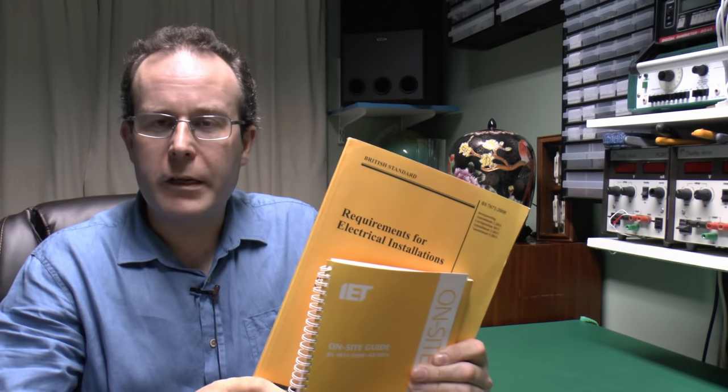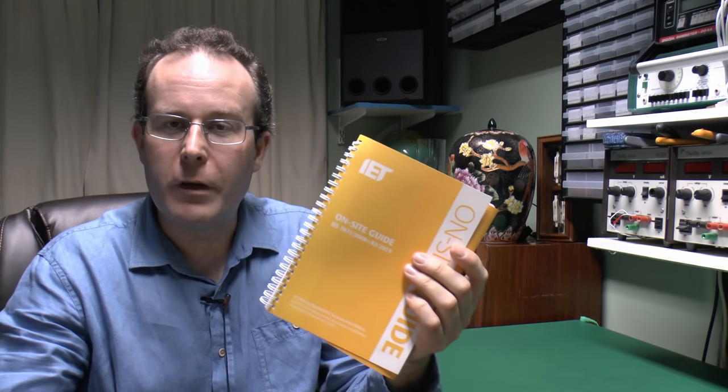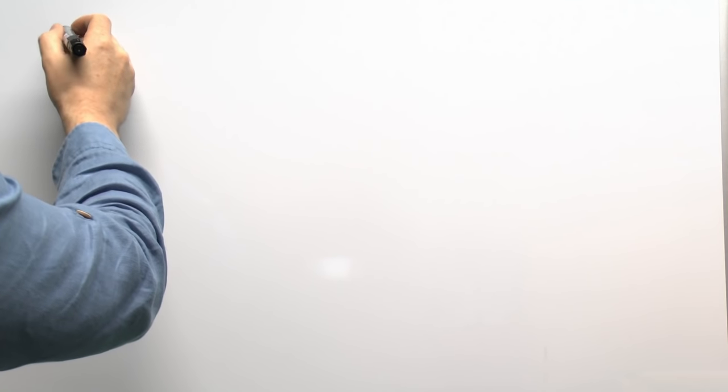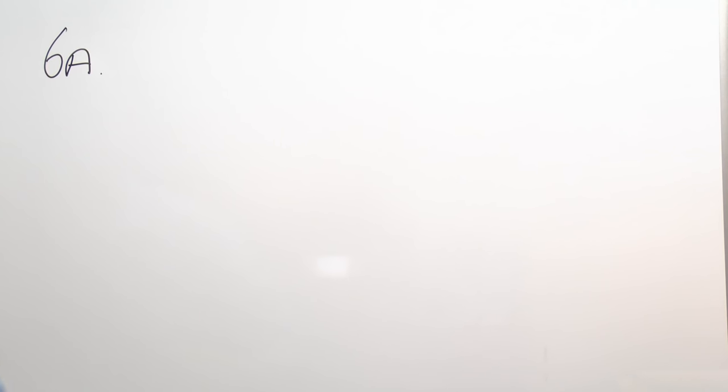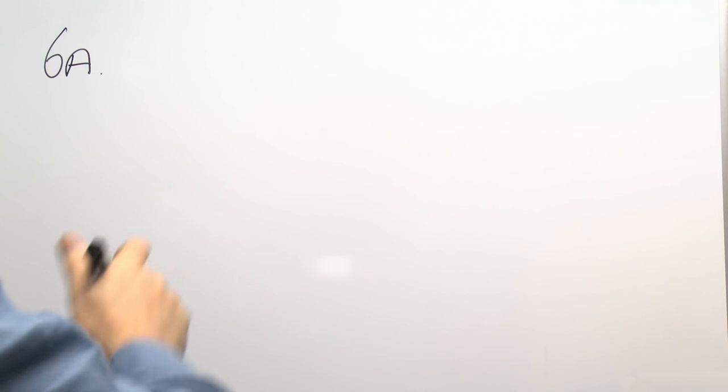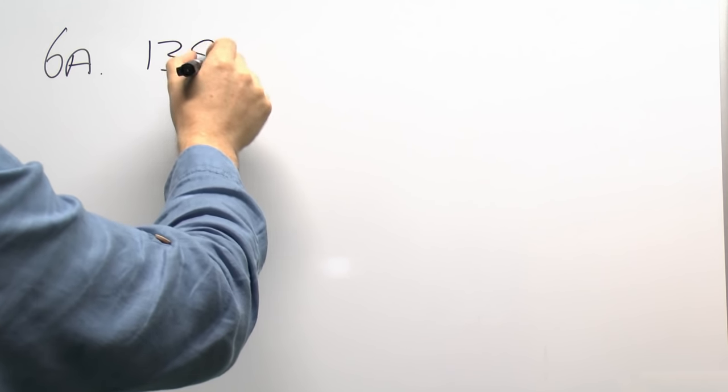That's what the books say — not very helpful: BS 7671 gives nothing, and the on-site guide gives somewhat outdated guidance. So let's look at some practical examples. For lighting in a typical house, a single lighting circuit would be a 6 amp circuit at 230 volts, equating to a power of 1,380 watts — which is actually quite a lot.